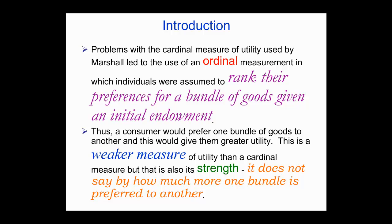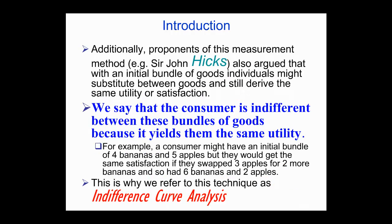A consumer would prefer one bundle of goods to another, and this would give them greater utility. This ranking process is a weaker measure of utility than the cardinal measure, but it actually has an immense strength for that reason — because it's not important to say by how much one bundle is preferred to another, it just is, and you just need to say that. You don't have to have some precise measurement. Nobel laureate Sir John Hicks also argued that with an initial bundle of goods, individuals might substitute between goods and still derive the same utility or satisfaction.